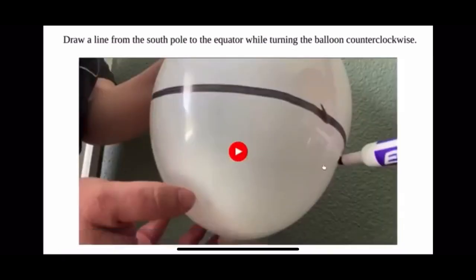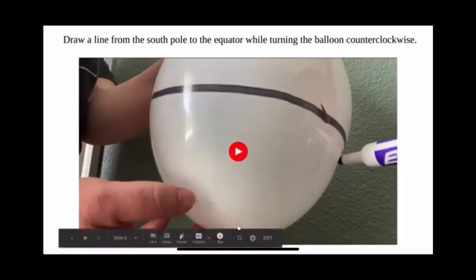this line still represents the equator. But this time, the marker is going to start down at the bottom, where the South Pole is.